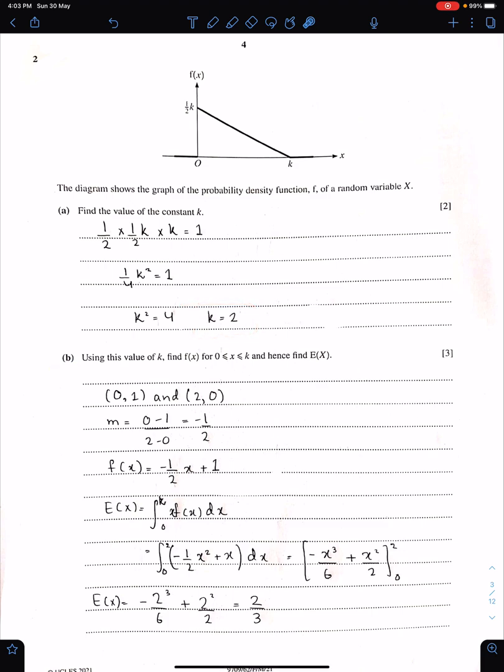Part B: Using this value of K, find F of X for these range of values of X and hence find E of X, that is the mean. First, we need to find the gradient with the help of these two values. Gradient is minus half and intercept is 1 with K equals 2. Therefore, the equation of PDF is minus half X plus 1. We use this equation, F of X equals MX plus C.